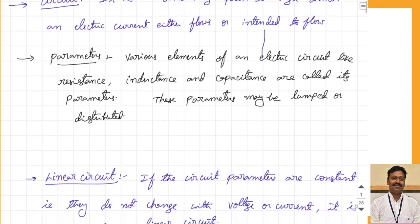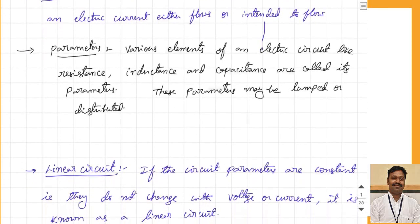The various elements of the electrical circuit — like resistance, inductance, and capacitance — are called the parameters. These parameters can be either lumped or distributed. The basic elements in an electrical circuit are resistance, inductance, and capacitance, and the interconnection of these forms your circuit along with the voltage sources.